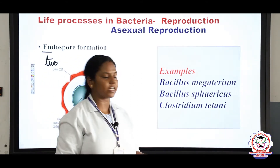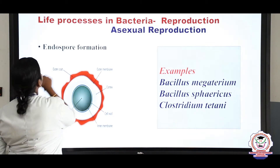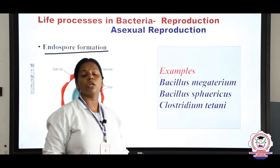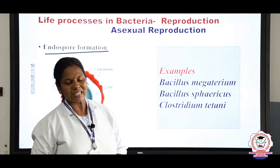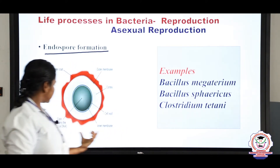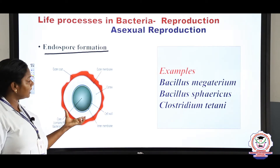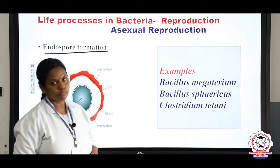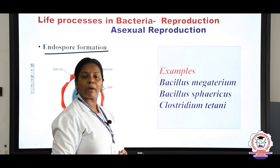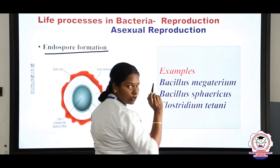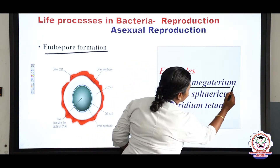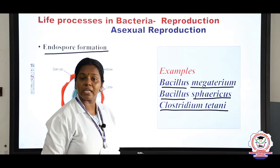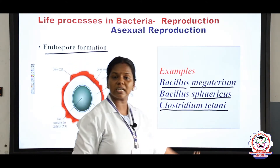The second type of asexual reproduction is endospore formation. During unfavorable conditions, bacteria reproduce by producing spores called endospores. Since the spore is present inside, it is said to be an endospore. It is a thick-walled cell. When favorable conditions return, the endospore germinates and develops into an individual bacterium. Examples of organisms that reproduce by endospore formation include Bacillus megatherium, Bacillus sphaericus, and Clostridium tetani. These are binomial names — one is the genus name and another is the species name.